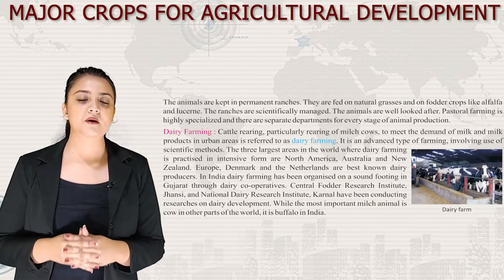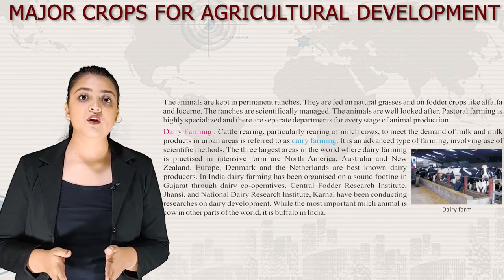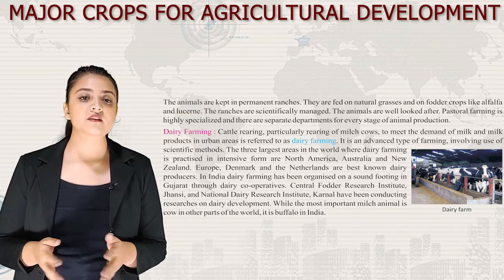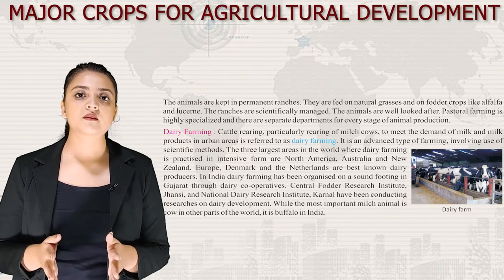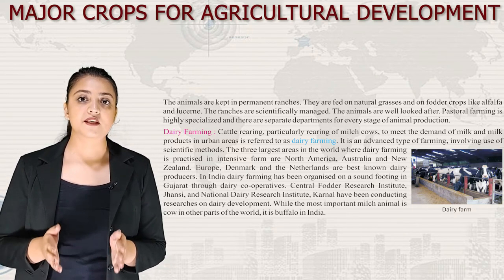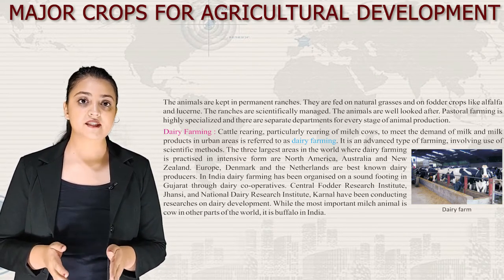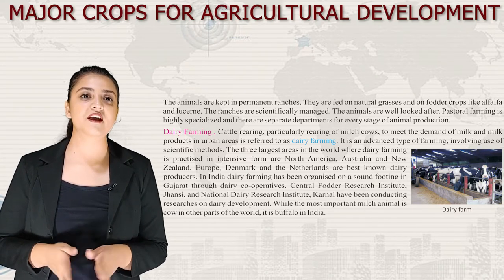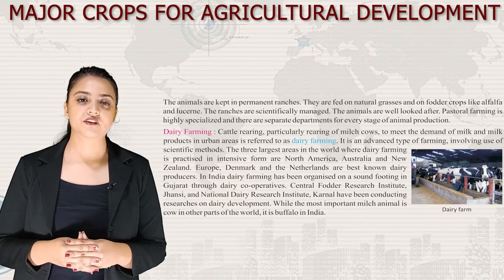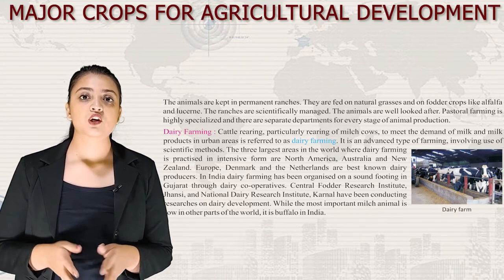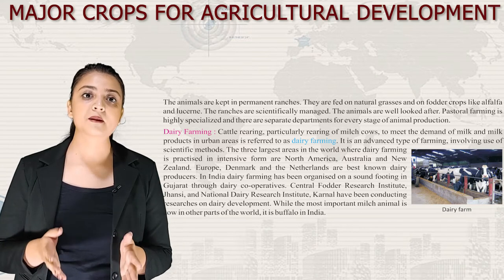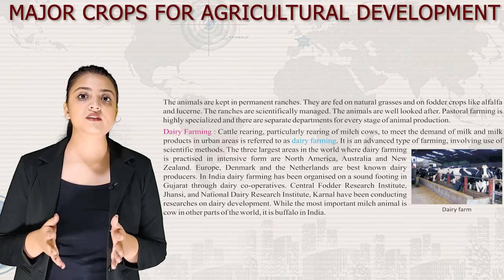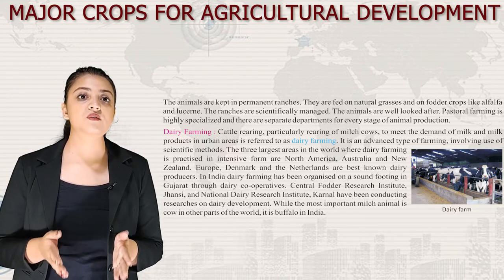Animals are kept in permanent ranches and fed on natural grasses and fodder crops like alfalfa and lucerne. The ranches are scientifically managed and animals are well looked after. Pastoral farming is highly specialized with separate departments for every stage of animal production. First we have dairy farming — the rearing of milk cows to meet the demand for milk and milk products in urban areas, involving scientific methods.